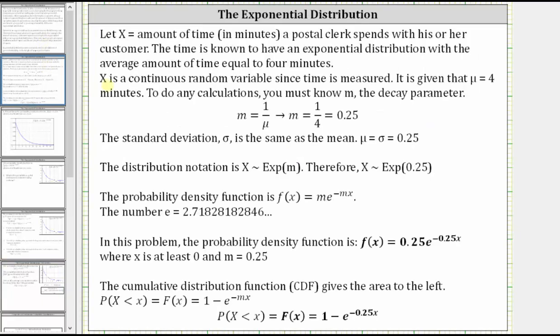For some background on the problem, the random variable X equals the amount of time in minutes a postal clerk spends with his or her customers. The time is known to have an exponential distribution with the average amount of time equal to four minutes.